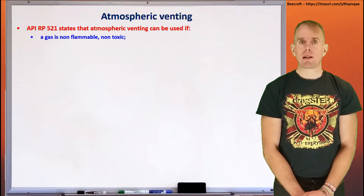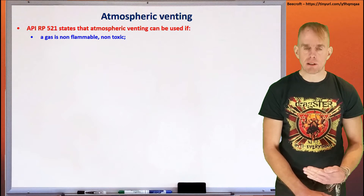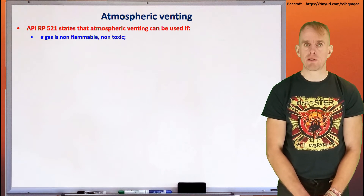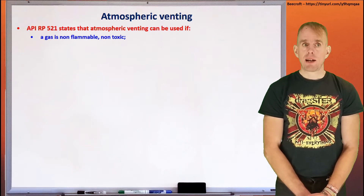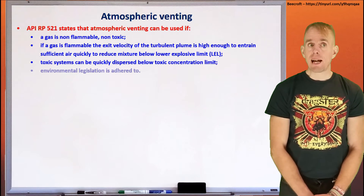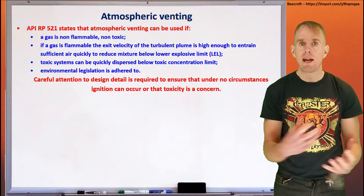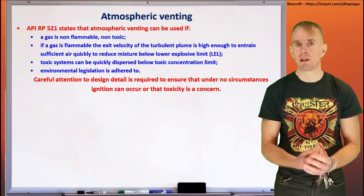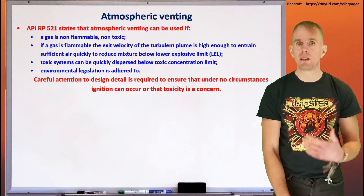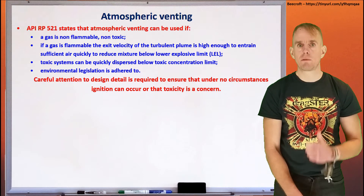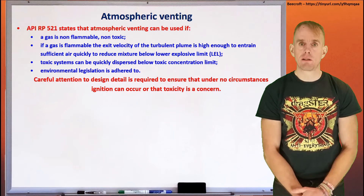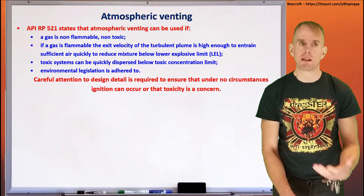So let's think about atmospheric venting. There are various pieces of established guidance in this area. The American Petroleum Institute RP521 is one of those established pieces of guidance, and this states that atmospheric venting can be used if a gas is flammable and non-toxic — if a gas is flammable and you can entrain enough air into it quickly enough to reduce the mixture below the lower explosive limit. With toxic systems, if you can quickly disperse the gas below any toxic concentration limit. But at all times, environmental legislation has to be adhered to. So it may not be possible in the toxic case to sufficiently disperse, in which case you're going into scrubbing and treatment systems.